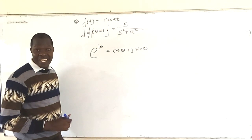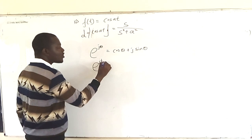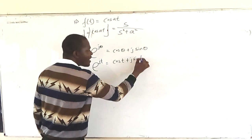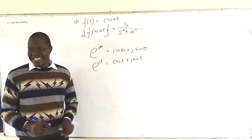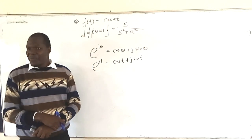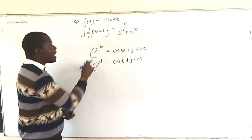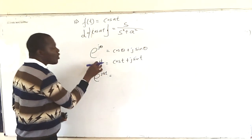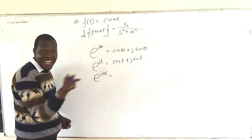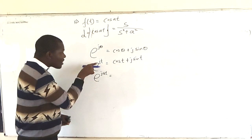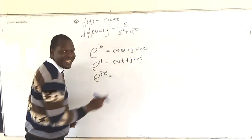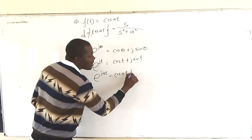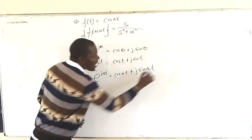You have to recognize that exponential j t gives you cos t plus j sin t. That is Euler's equation. If you now extend it to exponential j a t — where there is a constant a — then exponential j a t will be cos(at) plus j sin(at).